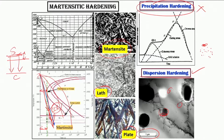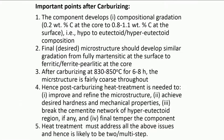This side on the right is for nitriding and this column is all for carburizing. We need to review the situation as to what happens after carburizing, what is the state after carburizing. First, we realize that we have developed a compositional gradation, easily from 0.2 weight percent to about 0.8 or even 1.1 weight percent carbon at the surface.